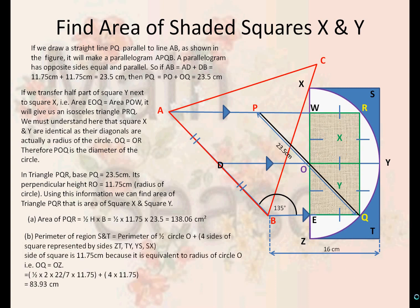Now look at section B of the question. We need to find the perimeter of the region S and T. The perimeter of half the circle O as its center...